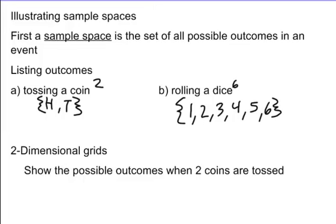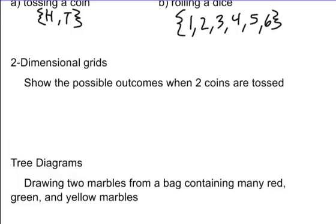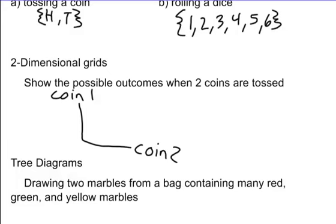Rolling a dice and flipping a coin might sound kind of easy just listing them out and knowing the different outcomes. But we have to know how to do this in different ways to show that there could be different possible outcomes if we do this more than once. To show the possibility when we toss two different coins, we can use a two-dimensional grid. If we have two different coins, we have coin one and coin two, each of which could be heads or tails.